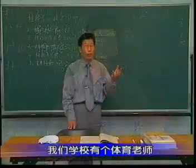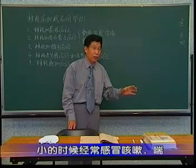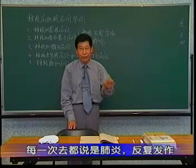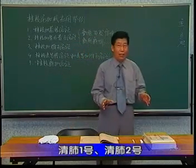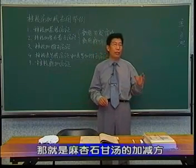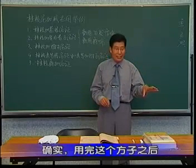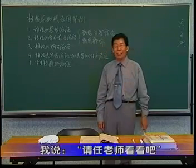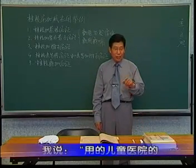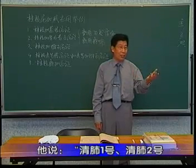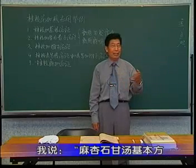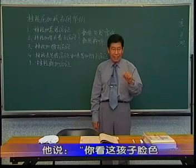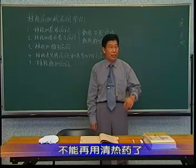桂枝加厚朴杏子汤今天在临床上用的不是太多。我们学校有个体育老师，他这个孩子小的时候经常感冒咳嗽、感冒喘，那么到儿童医院就说是肺炎，每次去都说他是肺炎，反复发作。儿童医院总是给清肺一号、清肺二号，那就是麻杏石甘汤的加减方，总是用清热来治。确实用上这个方子之后可以发烧退了、喘也是缓解，过几天他又犯。我说那个时候任云秋老师在世，咱们请任老师看看吧。任老师一看，说你用的什么方子，我说用的儿童医院的清肺一号、清肺二号，麻杏石甘汤为基本方加银花、连翘、芦根、白茅根、带蒂伞这类的。